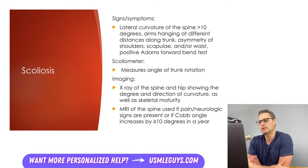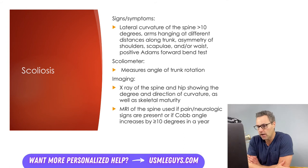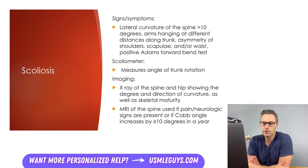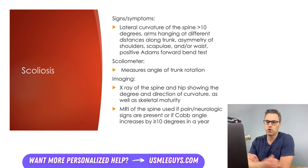The Cobb angle is measured by drawing a line parallel to the top of the end plate of the most cephalad vertebrae involved in a curve, and another line parallel to the bottom of the end plate of the most caudad vertebrae. The Cobb angle is formed by the intersection of these two lines, and a Cobb angle over 10 degrees is diagnostic. If patients have progression of scoliosis indicated by a Cobb angle increase of 10 degrees or more in a year, or any pain or neurological signs, an MRI needs to be performed.